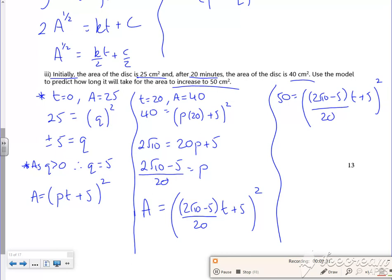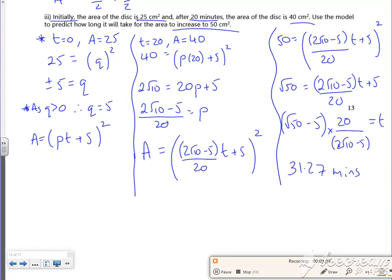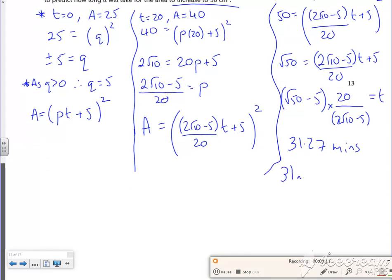Right, so I'm going to take the square root of 50. So √50 is (2√10 - 5)/20 times (t + 5). So then I'm going to take away the 5, multiply by 20 over (2√10 - 5), and hopefully that will equal t. And it gives me 31.27 minutes, which is roughly 31 minutes and 16 seconds.